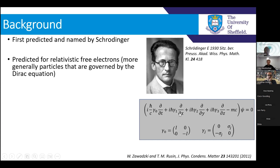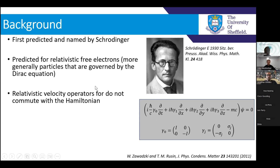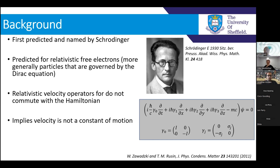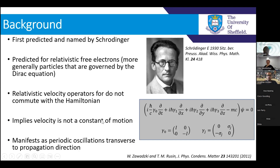More generally, it's for any particle that is governed by the Dirac equation. This prediction arose when he realised that the relativistic velocity operators don't commute with the Hamiltonian. What this implies is that the velocity isn't a constant of motion. So you have a sort of classical velocity in the expected direction, but then you have this quantum velocity manifesting as periodic oscillations transverse to the propagation direction.